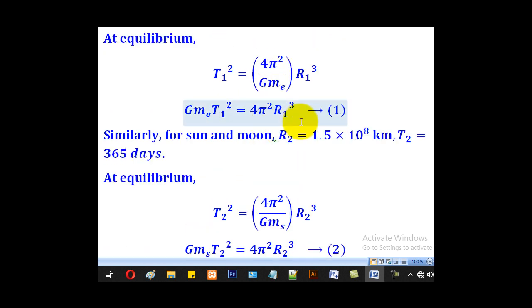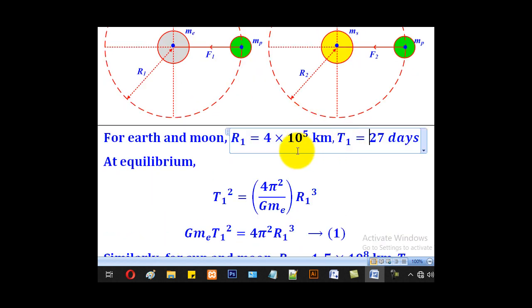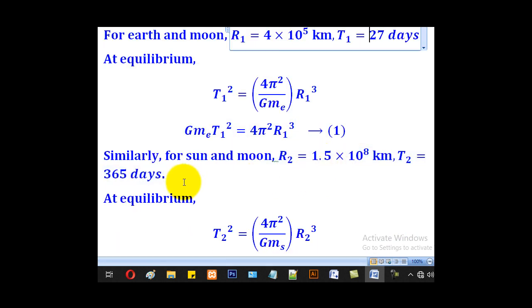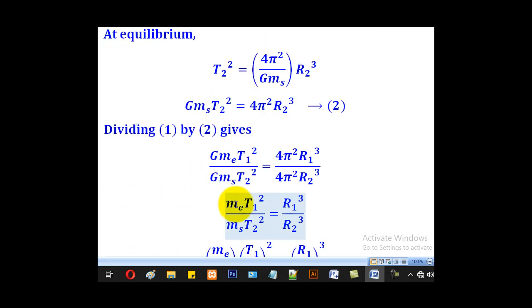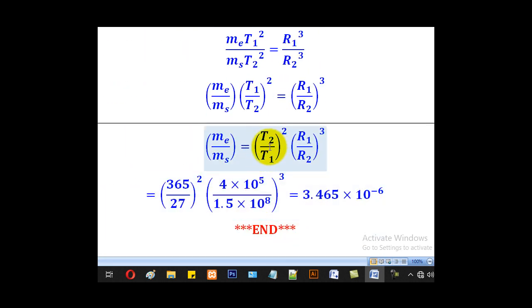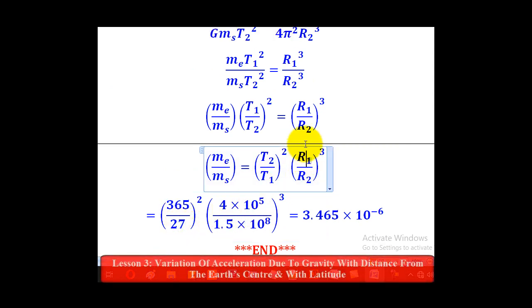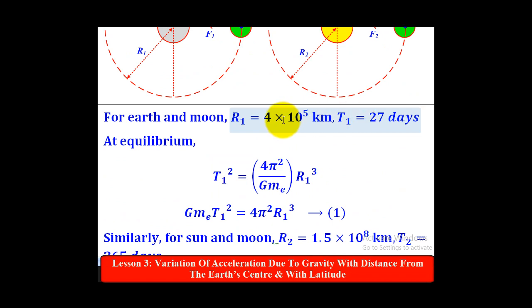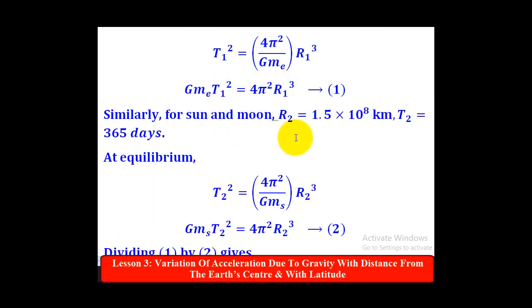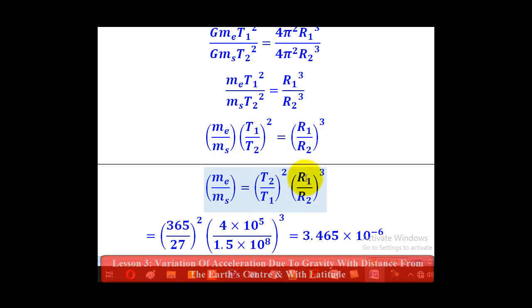Now we shall substitute. Remember T₁ was given as 27 days and T₂ was given as 365. Come and substitute T₁ and T₂ here. T₂ is on this side, T₁ is there.